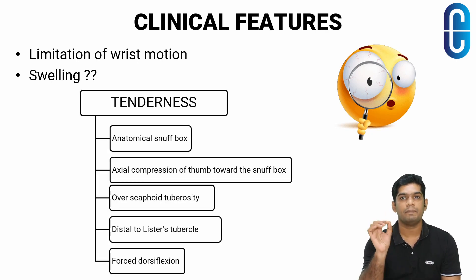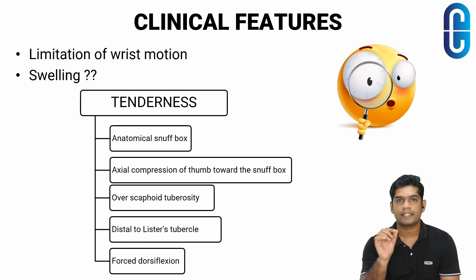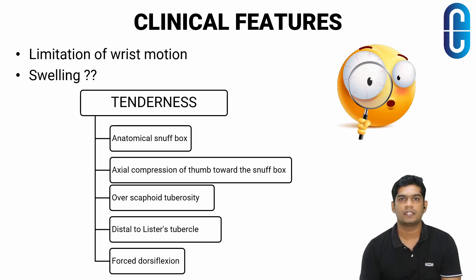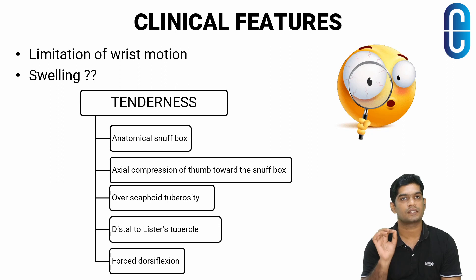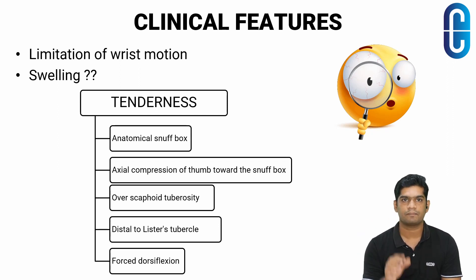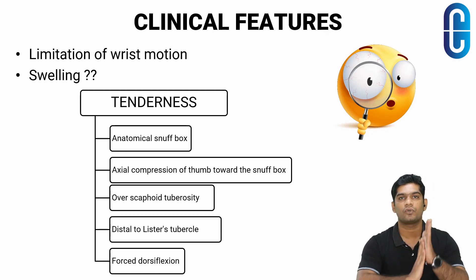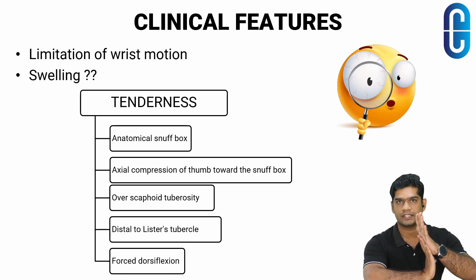There will be tenderness and you should know where to look for it. There will be tenderness in the anatomical snuff box, tenderness on axial compression of the thumb towards the snuff box, over the scaphoid tuberosity, distal to Lister's tubercle, and there will also be pain on forced dorsiflexion.